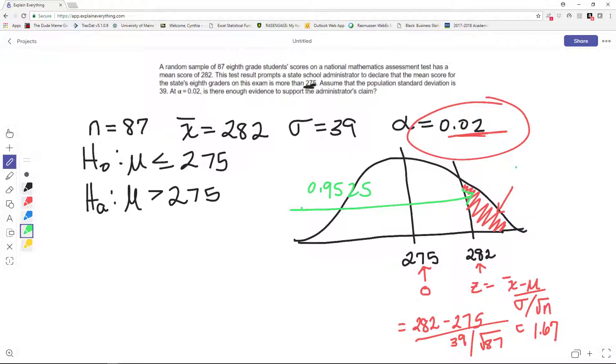If I want this area, then I have to take and subtract 1 minus. And I get 0.0475.